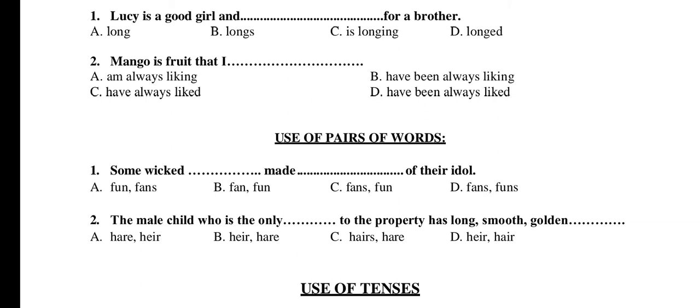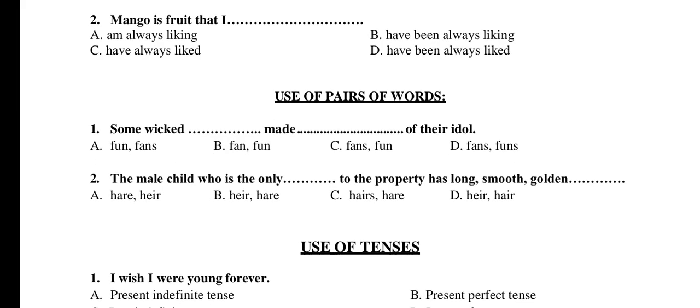Use of Pair of Words. Question 1: Some wicked ___ made ___ of their idols. A) fun/fans, B) fan/fun, C) fans/fun, D) fans/fun. The right option is C: fans/fun. Question 2: The male child who is the only ___ to the property has long smooth golden ___. A) hair/hair, B) hair/hair, C) hairs/hair, D) hair/hair. The right option is D: hair/hair.